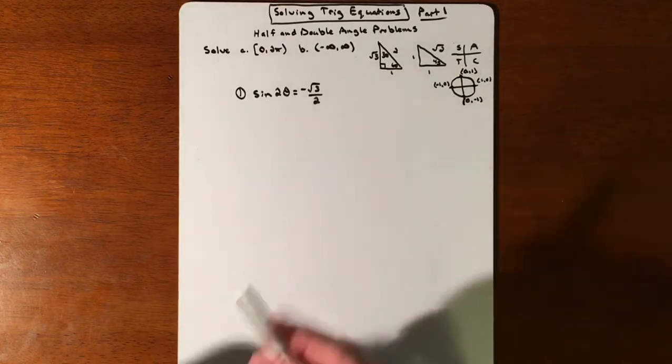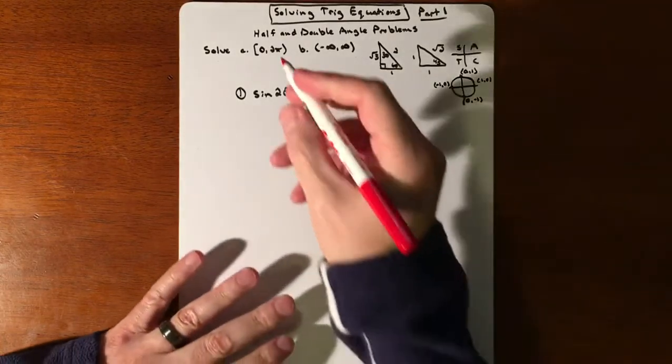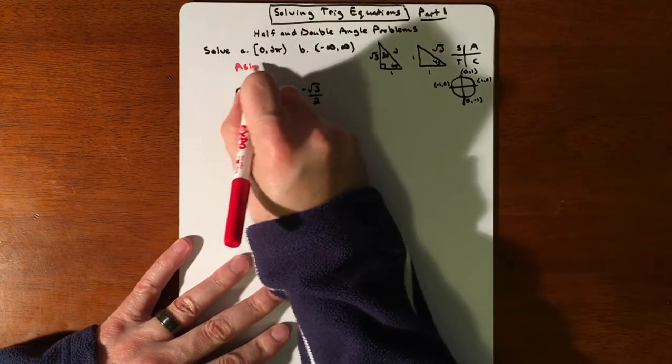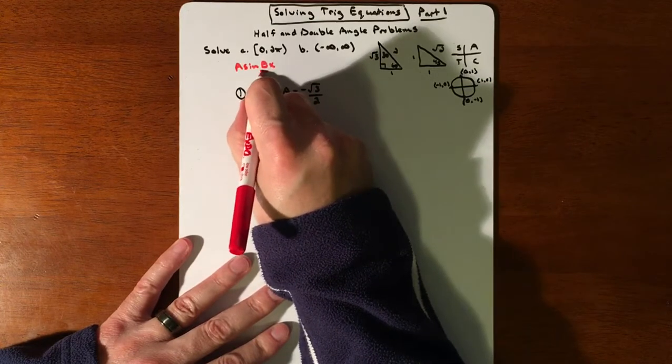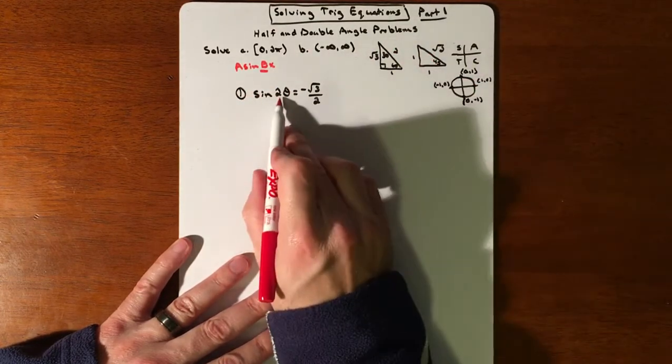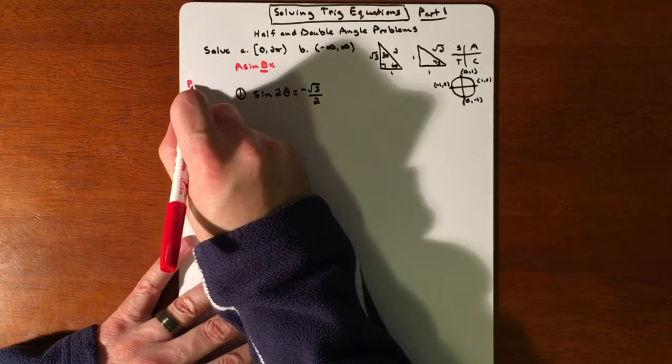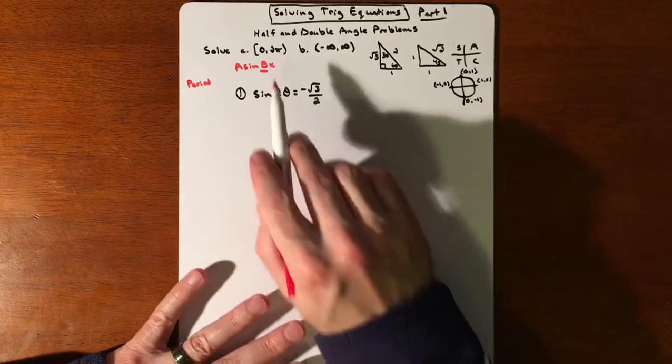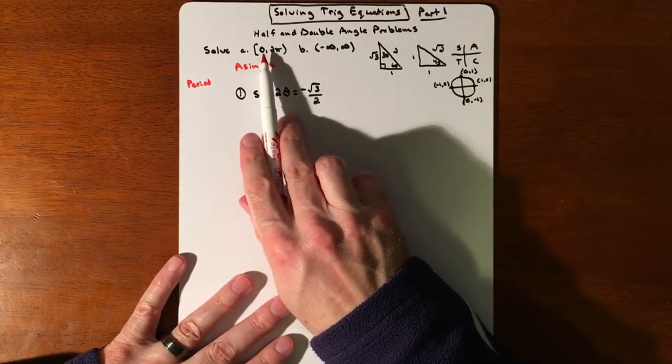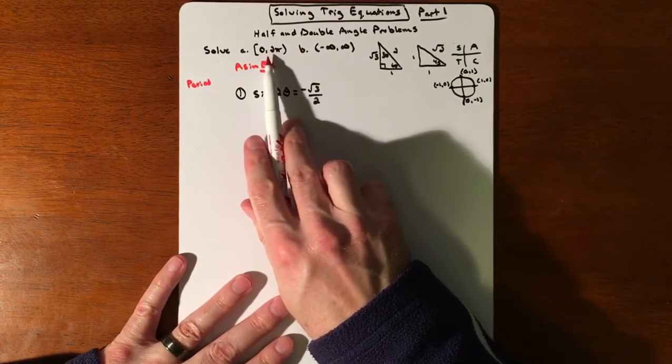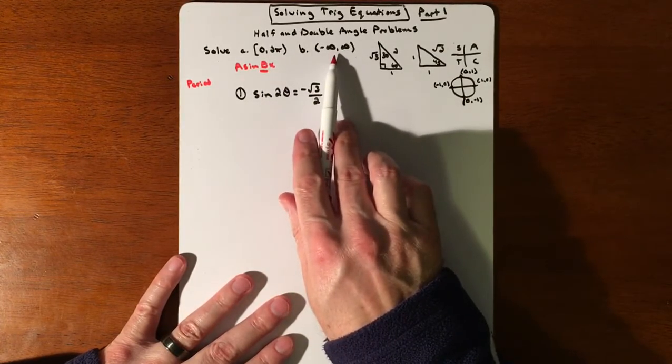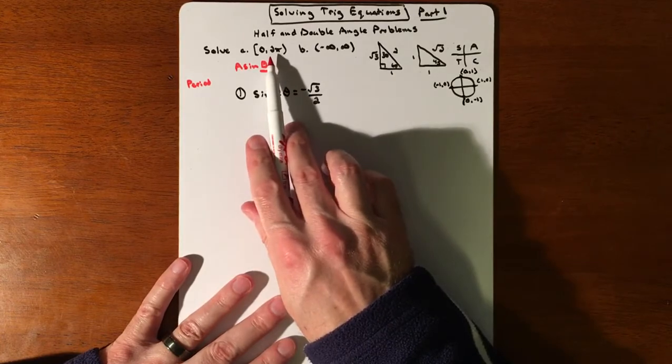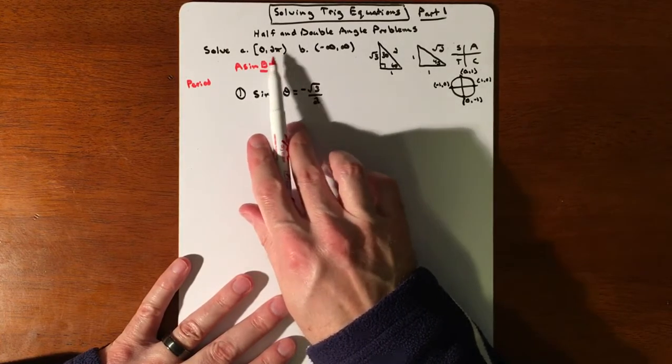What's going to happen is when you go back to the idea of graphing and you have sine of bx, that value right there messes with your period. So our period, instead of it repeating itself every 2π, we're going to do two different kinds of answers. We're going to limit it from 0 to 2π, which is pretty normal, but we're also going to talk about what if you don't have a limit. So we're going to write the infinite amount of answers or just how many answers do we have from 0 to 2π.